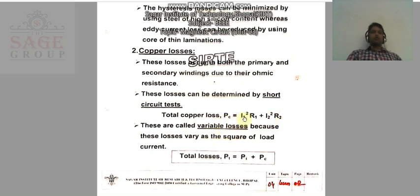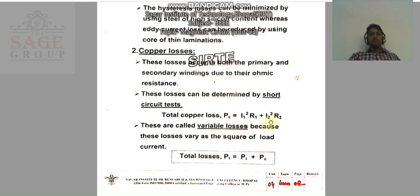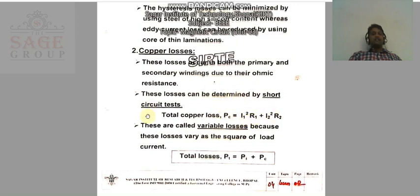The copper loss in the primary winding equals I1 squared times R1, where I1 is the primary current and R1 is the resistance of the primary winding. The copper loss in the secondary winding equals I2 squared times R2, where I2 is the secondary current and R2 is the resistance of the secondary winding. By adding the I²R of both windings, we can easily calculate the total copper loss of the transformer.